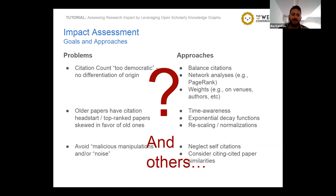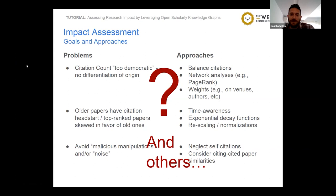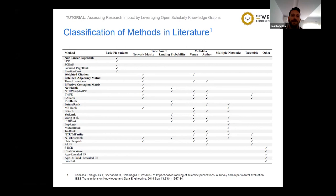These are just a few of the problems in the literature. In our own work, we found more than 30 methods. You can see them in brief in a table in our paper referenced at the bottom of the slide. We categorize the methods based on the types of data they use and their computational model. In the following, I will classify them first based on the types of data they use.